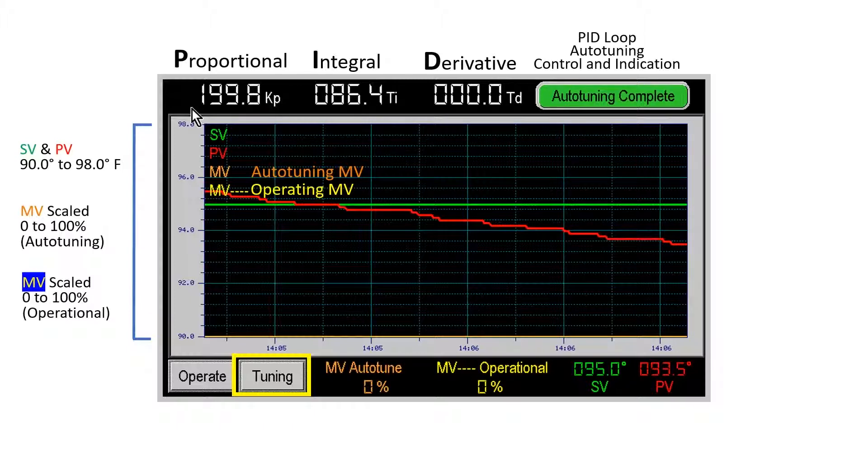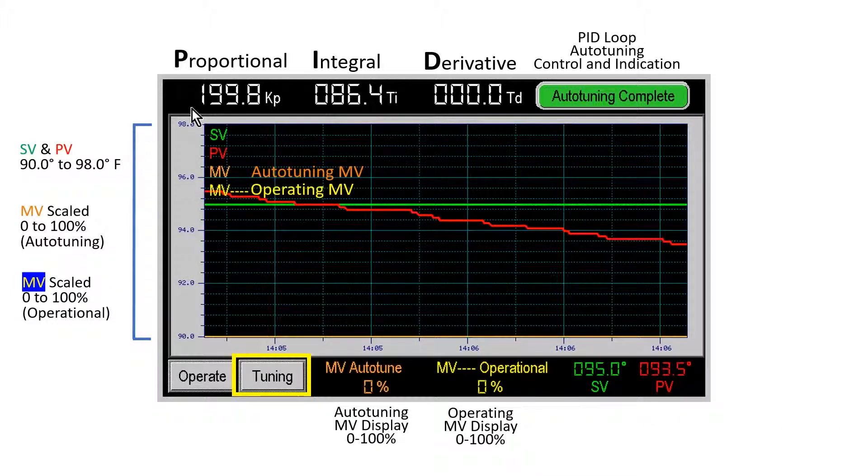PID auto-tuning cannot be performed when the loop is running. The auto-tuning MV and operational MV are both displayed. The SV and PV values are displayed. The SV may be changed here also.